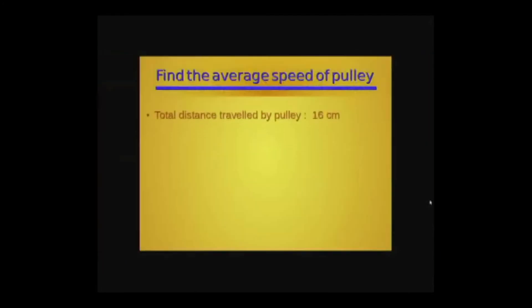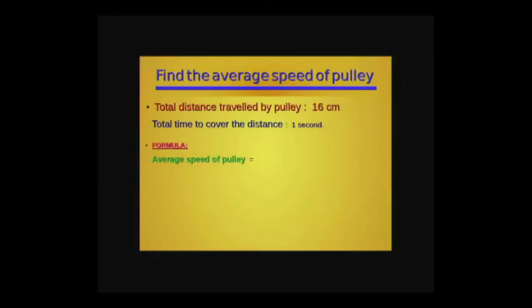So, the average velocity of pulley: the distance traveled by pulley is 16 centimeters. The time to cover the distance is one second. The formula is, average speed of pulley equals total distance traveled by pulley divided by total time taken to cover the distance. The average speed of pulley is 16 centimeters per second.